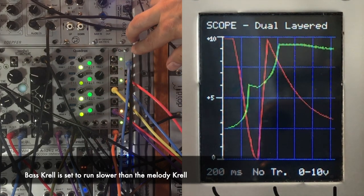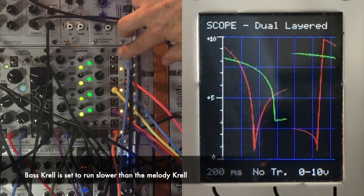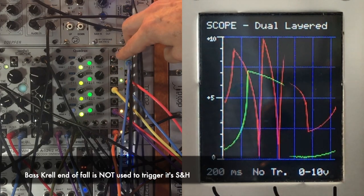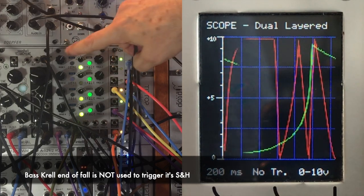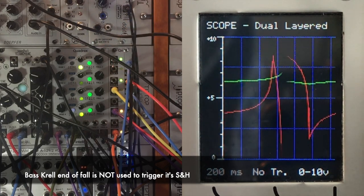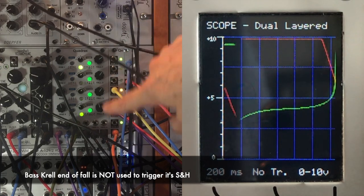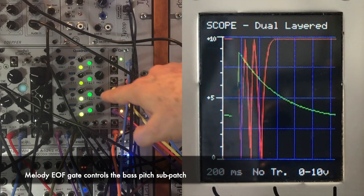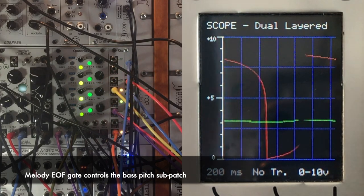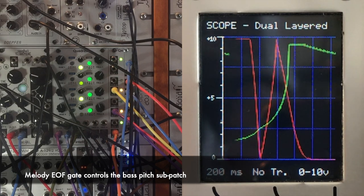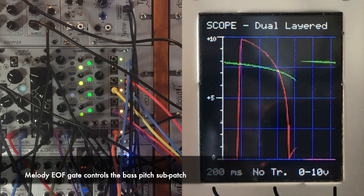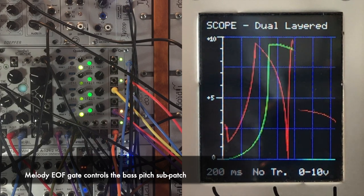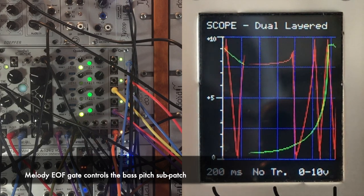What's interesting, if you look over here to the external gate outputs, I'm not using any of the gate outputs, neither end of rise or end of fall on channel one. So I'm using gates from channel four to create and to grab notes for the pitches of my bass part. And the reason I'm doing that is that I need the bass part to sort of follow along with what the melody is doing, but I don't want it to follow along so closely that it's doing exactly the same thing.